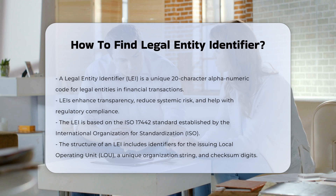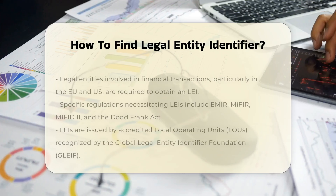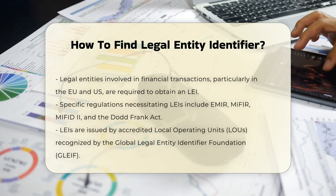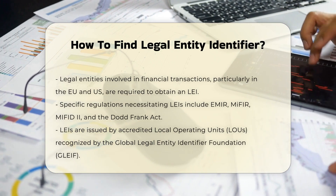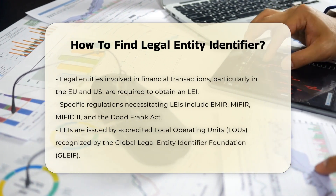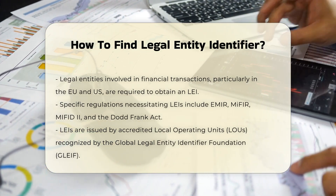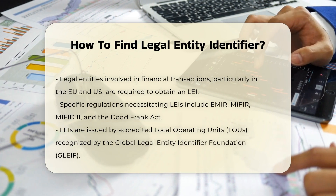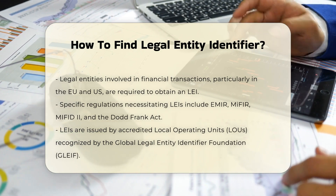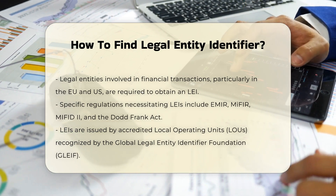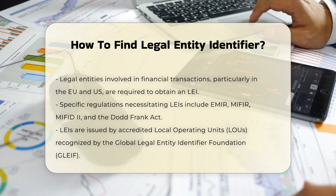Structure of an LEI. The LEI consists of a 20-character alphanumeric string. The first four characters identify the local operating unit, LOU, that issued the LEI. Characters 5 to 18 are the unique alphanumeric string assigned to the organization, and the final two characters are checksum digits.